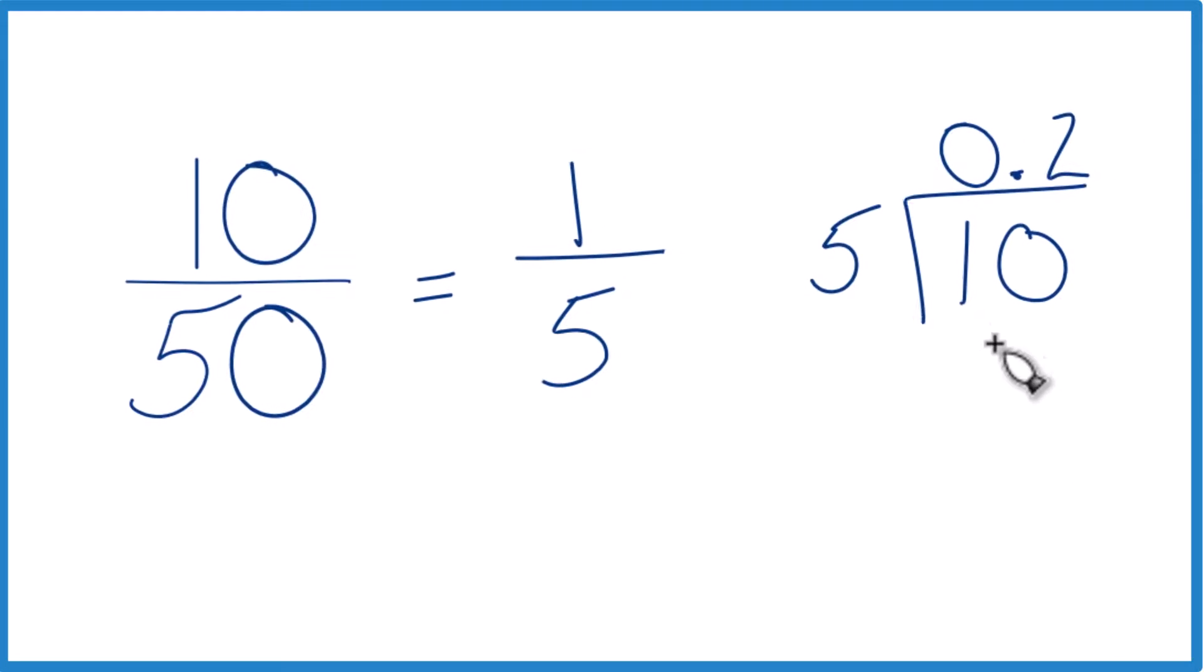Now, 2 times 5, that's 10. Subtract, no remainder. So the fraction 10 fiftieths, we could simplify that down to 1 fifth, and then when we divide 5 into 1, we end up with 0.2,